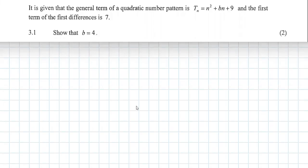This is the November 2022 CAHPS DBE NSC exam, paper 1, question 3. It's given that the general term of a quadratic number is this, and the first term is 7. Show that B, so B the unknown over there, is equal to 4.